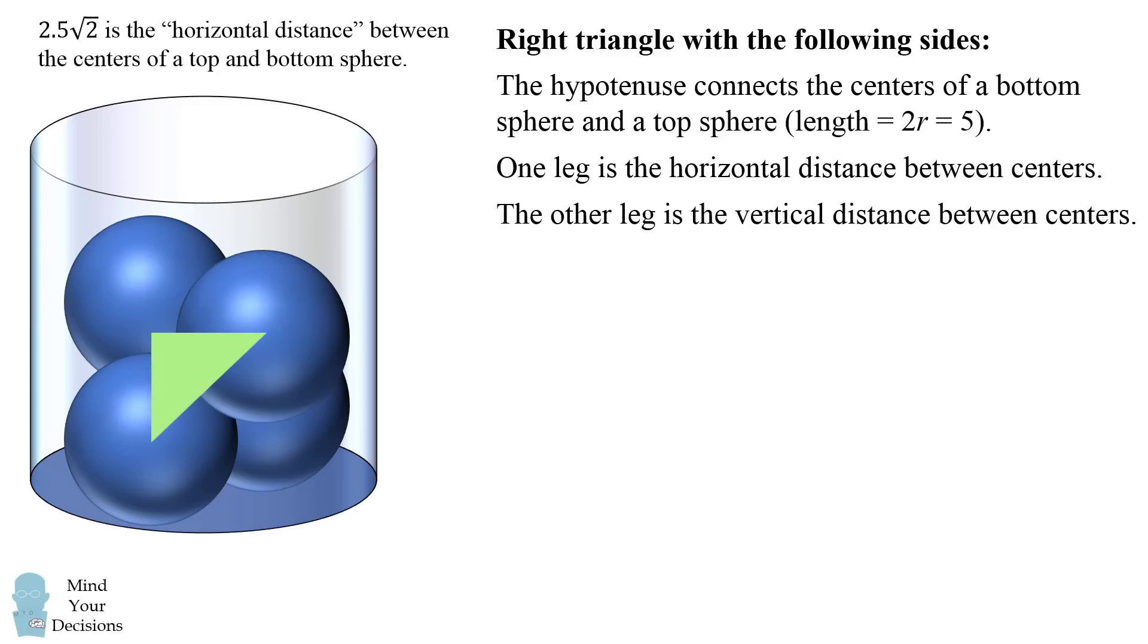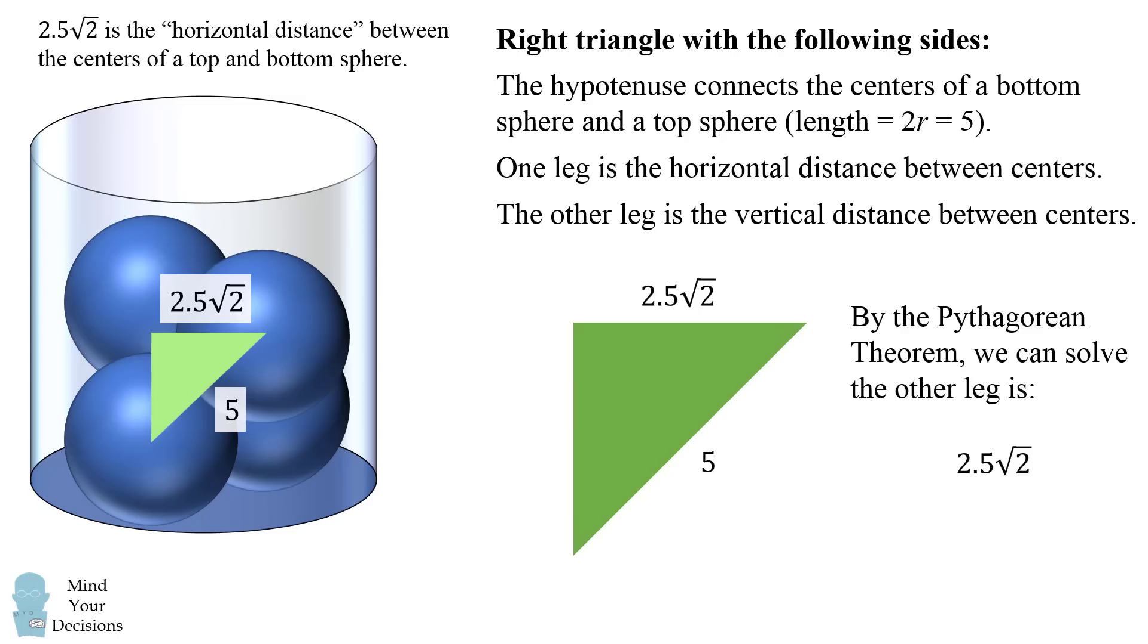So we end up with a right triangle that's like this. It connects the centers of two spheres, and we have the horizontal and vertical distance. So we already know that the hypotenuse is equal to 5. We just figured out the horizontal distance is 2.5 times the square root of 2, and therefore the remaining side will also be 2.5 times the square root of 2.